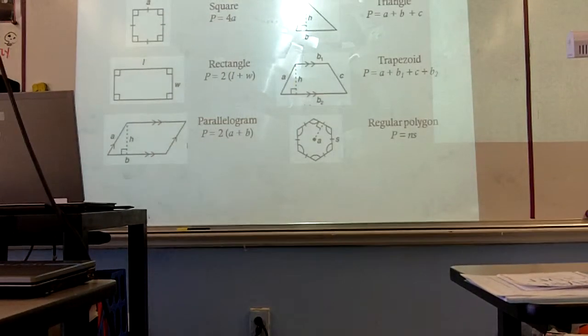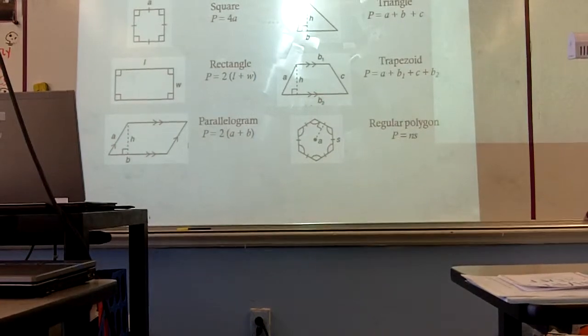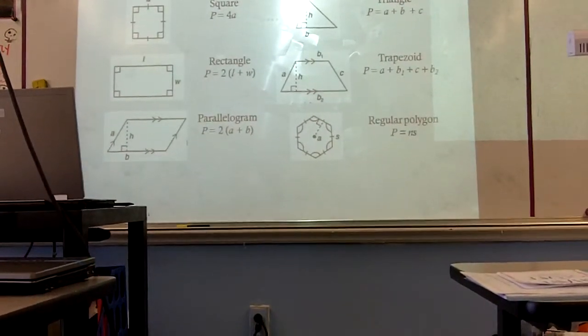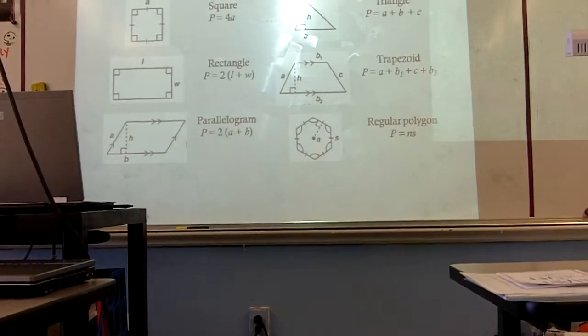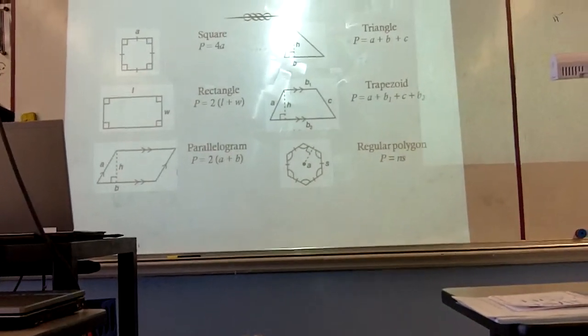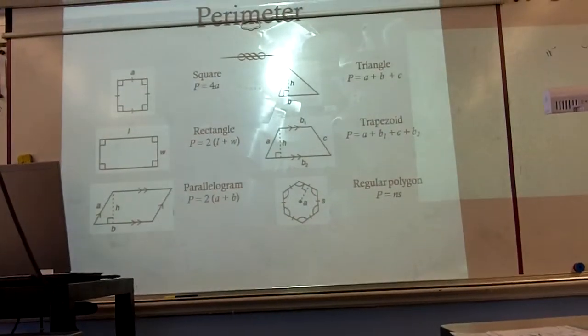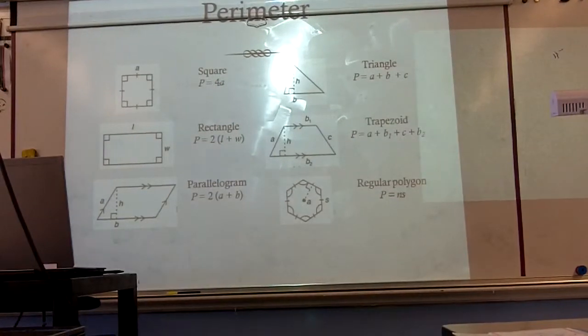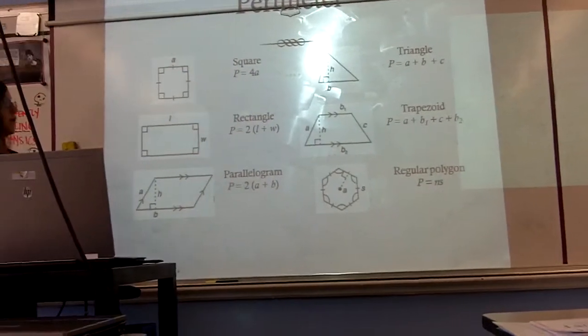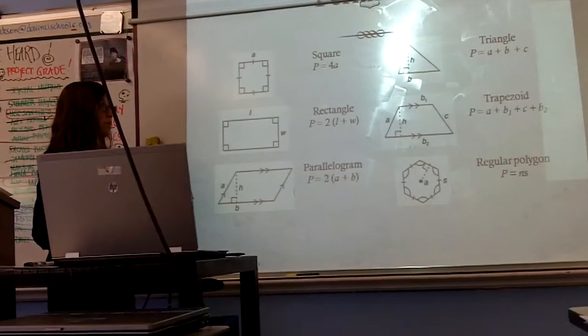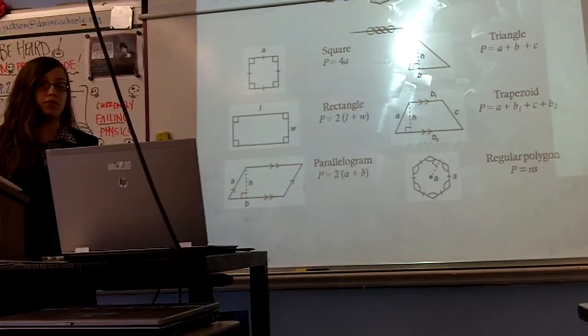For perimeter, each polygon has its own equation, but the same principles are followed. The length of each side is measured, and then all the side lengths are added together to measure the distance around the shape. For example, the equation for the perimeter of a rectangle is P equals 2 times L plus W, where P is perimeter, L is length, and W is width.